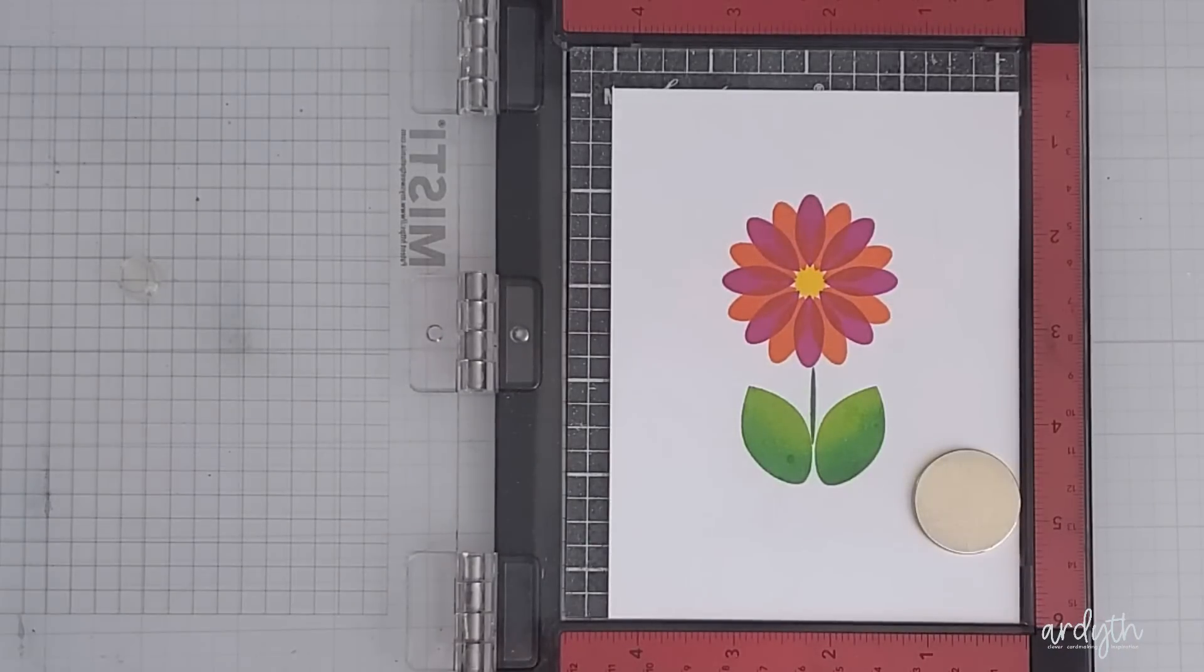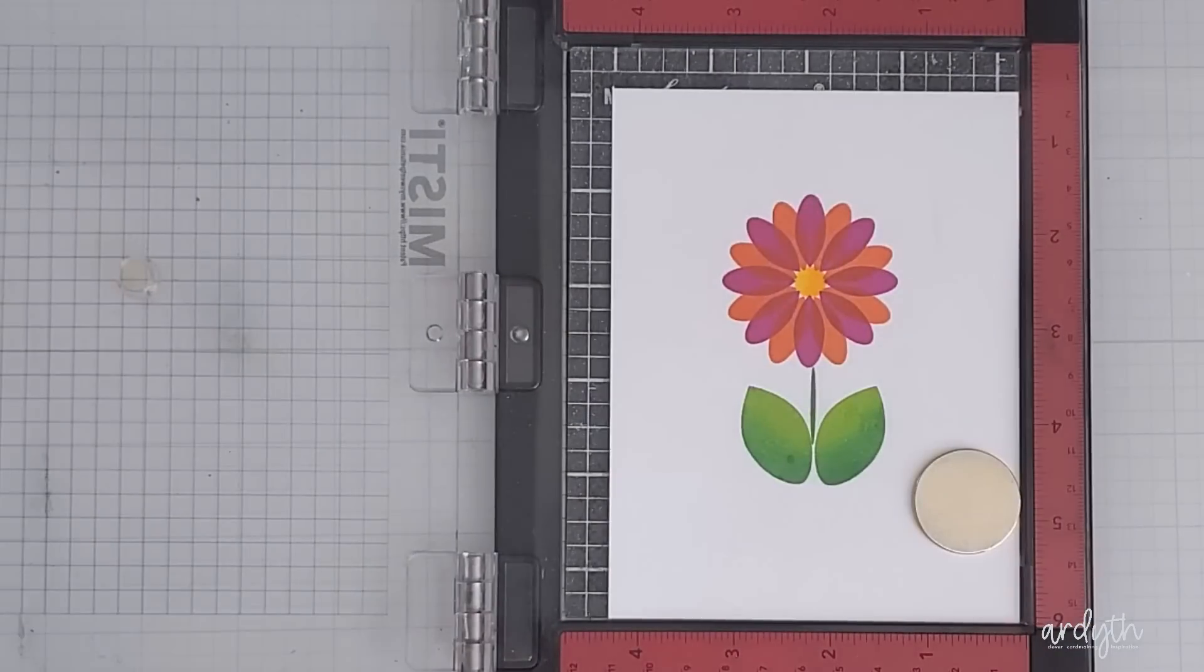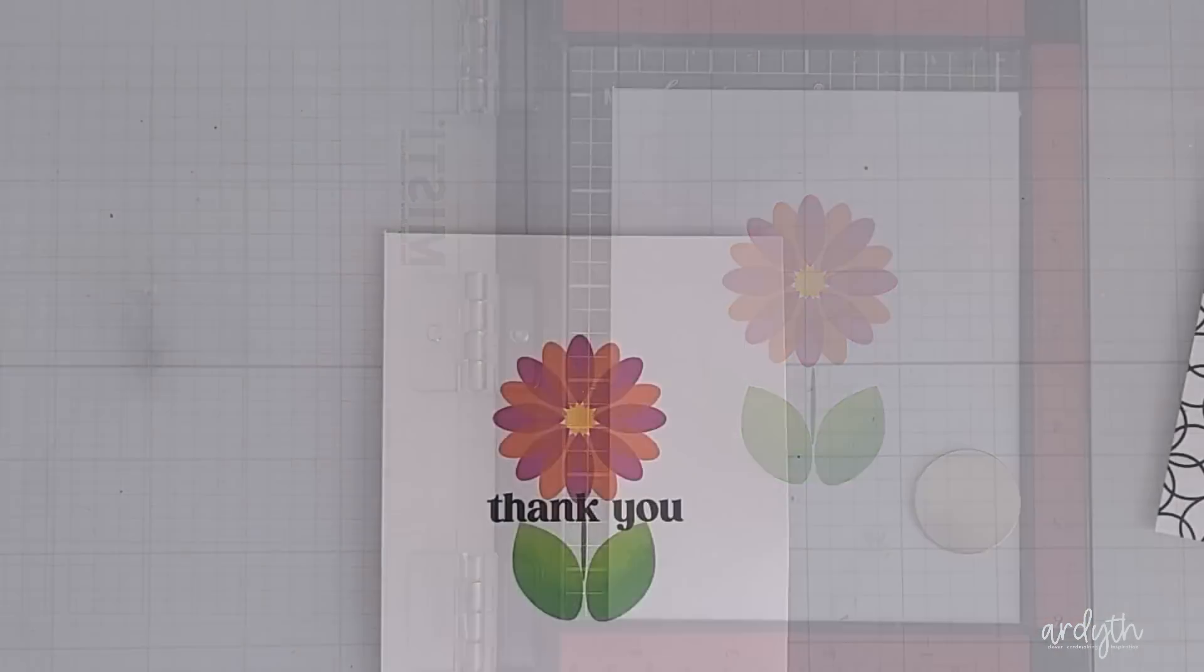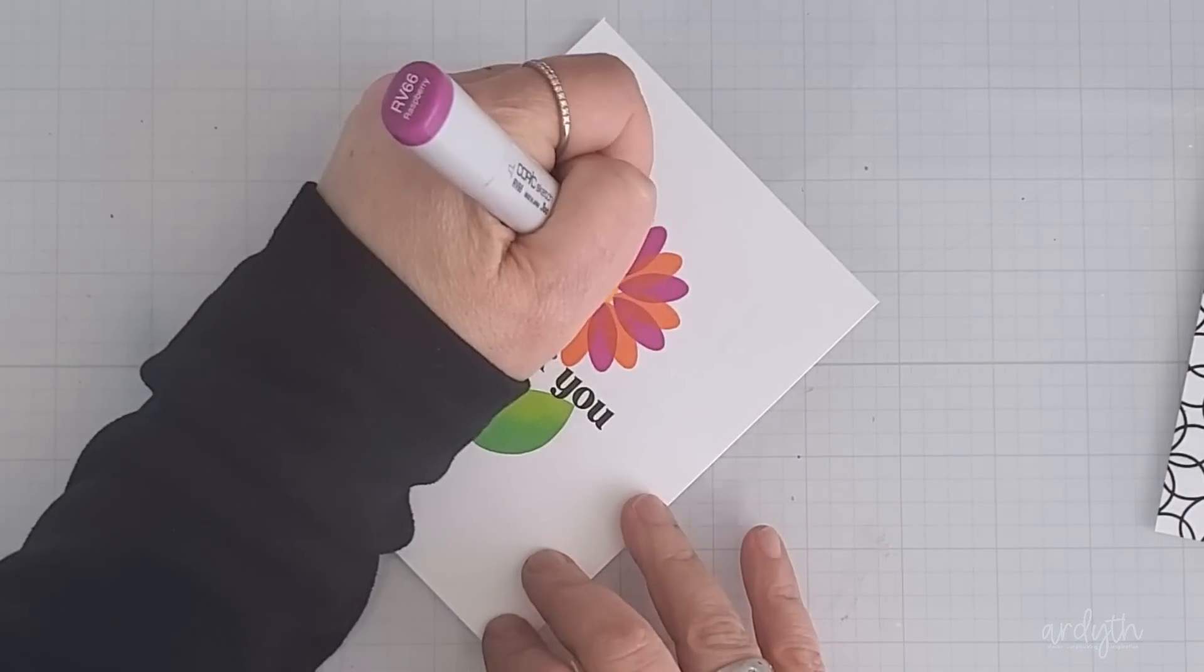I stamped the stem with lime ricky and aquatini. No blending for such a small image. And then I stamped the flower center with limoncello and tiki torch.